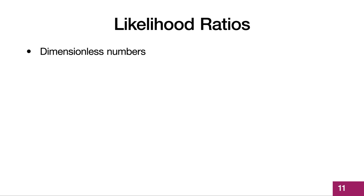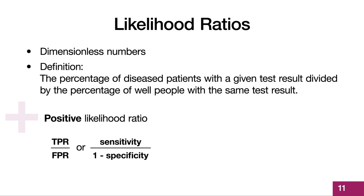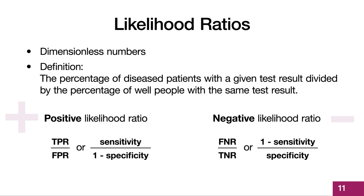Likelihood ratios are dimensionless numbers, so you don't have to keep track of what's in the numerator and denominator. A likelihood ratio is defined as the percentage of disease patients with a given test result, either positive or negative, divided by the percentage of well people with that same test result. Therefore, the positive likelihood ratio is defined as the true positive rate divided by the false positive rate, or sensitivity divided by 1 minus specificity. A negative likelihood ratio is defined as the false negative rate divided by the true negative rate, or 1 minus sensitivity divided by specificity. We can calculate likelihood ratios for anything that has a reported sensitivity and specificity, such as clinical tests and even physical exam findings.